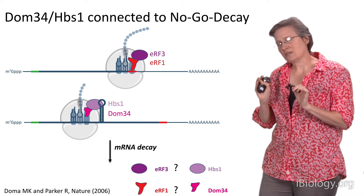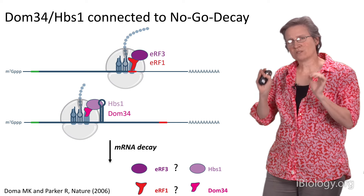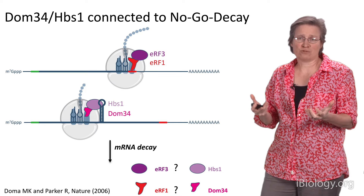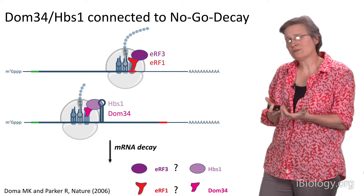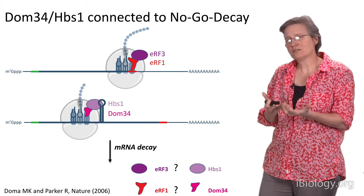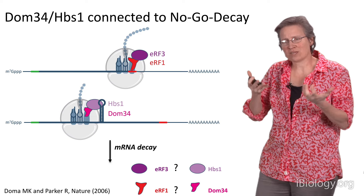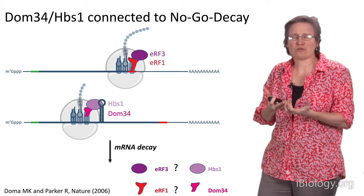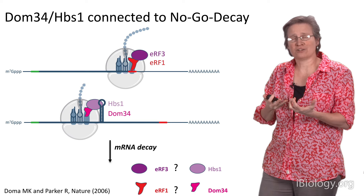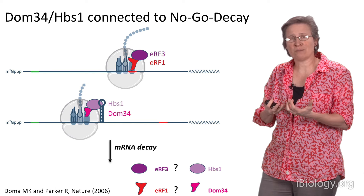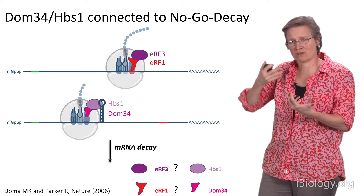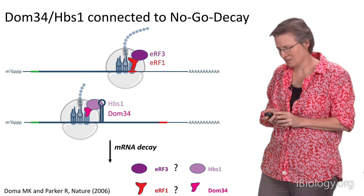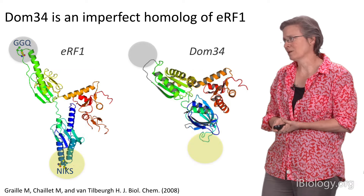This seemed like a key insight because it suggested that recognition of a bad messenger RNA is ribosome-driven, as you might suspect — the ribosome must be the macromolecule that decides whether a message is good or not. It seemed very logical that the ribosome determines whether a messenger RNA is good or bad: should I translate it or should I not? And that's where our work started.